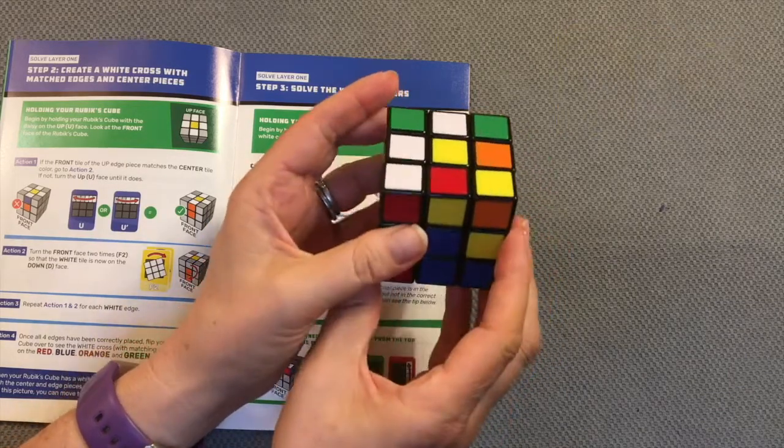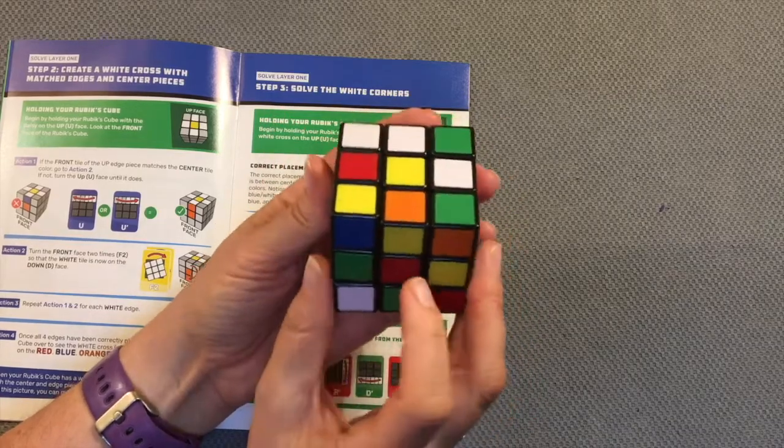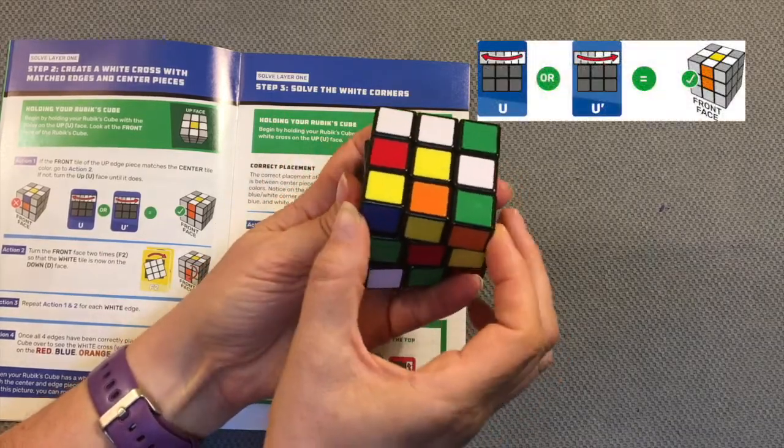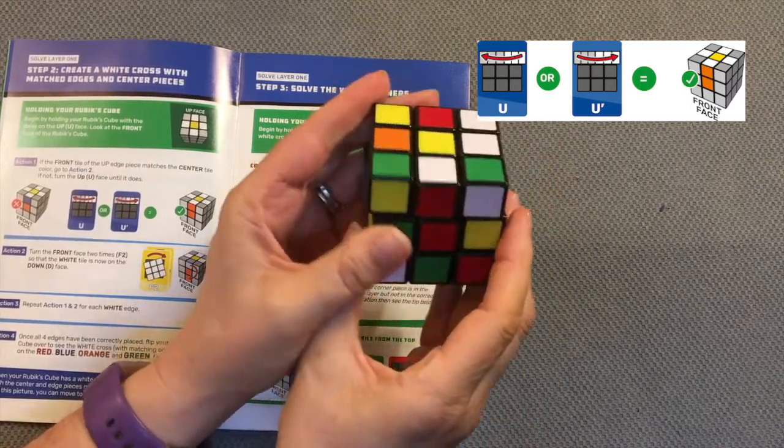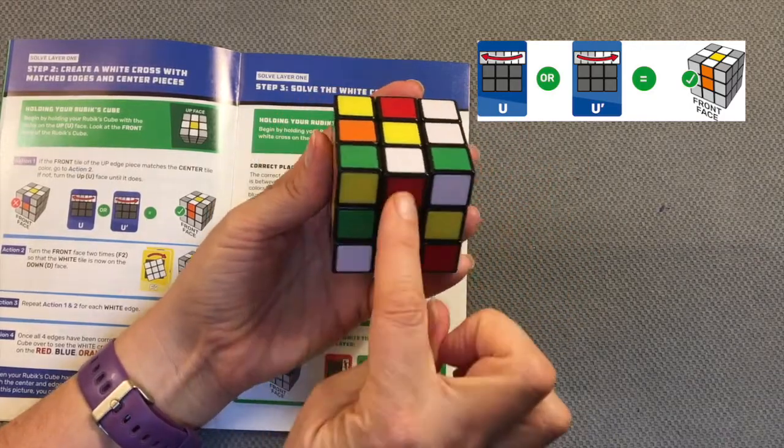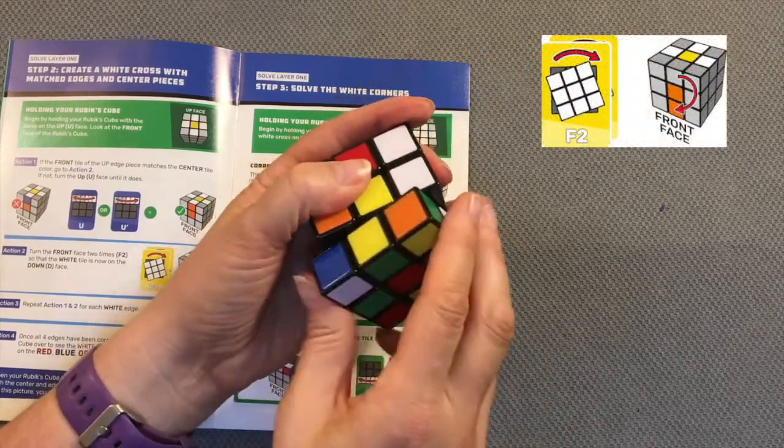Rotate again. This time I am looking for the red edge piece. There it is. Once I have my edge piece and centerpiece lined up, two turns of my front face. One, two.